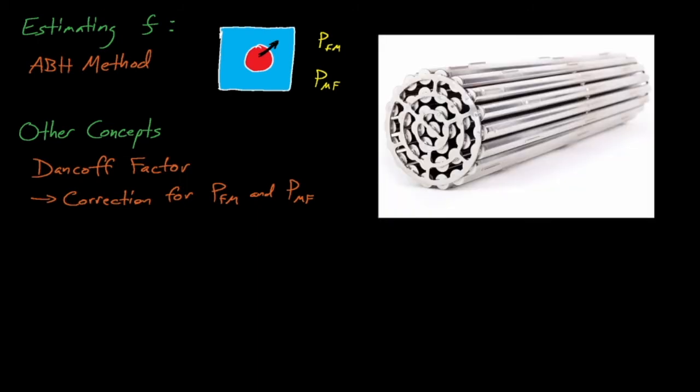Dankoff factors are, for example, extremely necessary when homogenizing CANDU reactor fuel, which is often arranged in this interesting horizontal ring pattern.